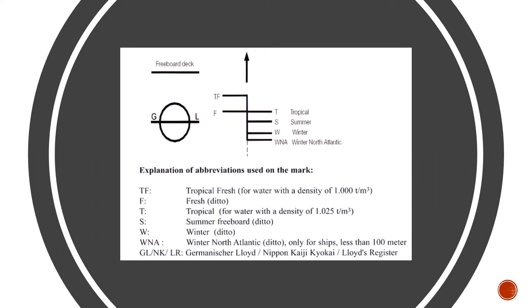The ship may load cargo until the upper edge of the relevant load line at the appropriate water level. So if you are in a geographic region classified as the winter load line zone, you may load your ship up to the winter load line. The whole world is divided into load line zones, and normally the load line chart is provided in the ship's office next to the chief officer's loadicator, because the chief officer has to know which waters the ship is in to plan the loading accordingly.